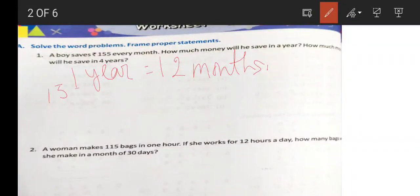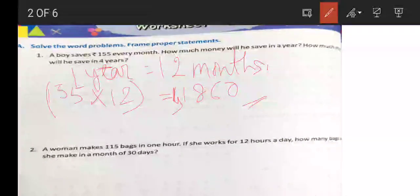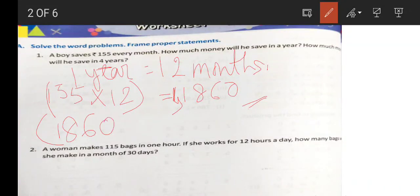So we have to multiply 155 with 12. That gives us 1860. For four years, we multiply 1860 by 4, which equals 7440. So 7440 is the answer.